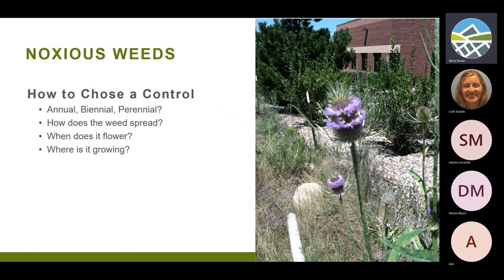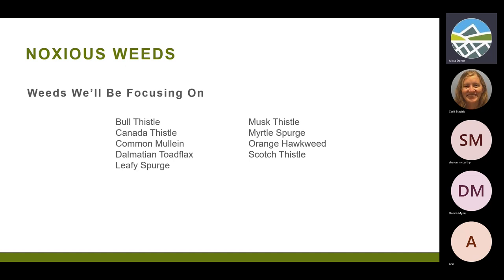How do you choose a control? Consider how the plant grows — is it annual, biennial, or perennial? How does it spread — by root, plant fragment, or seed? When does it flower? There are some weeds like hoary cress that bloom early, or cheatgrass that's already going to seed. Others haven't even started yet. And again, where is it growing? We're going to focus on a list that's about a tenth of the full list, but hopefully you'll be able to take away the basic concepts and translate them to other species.